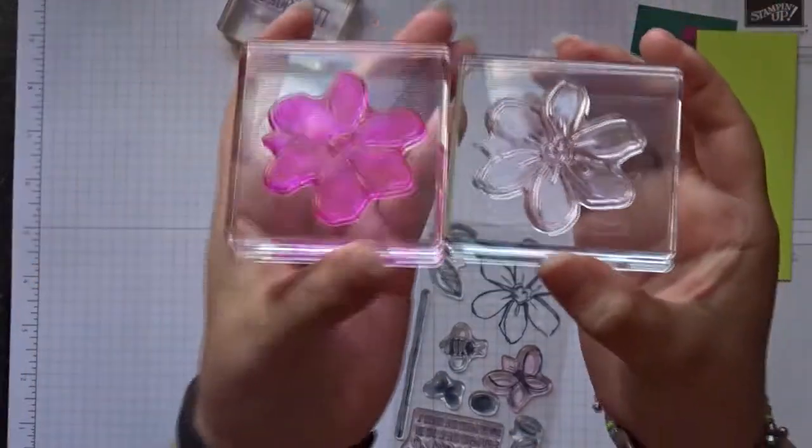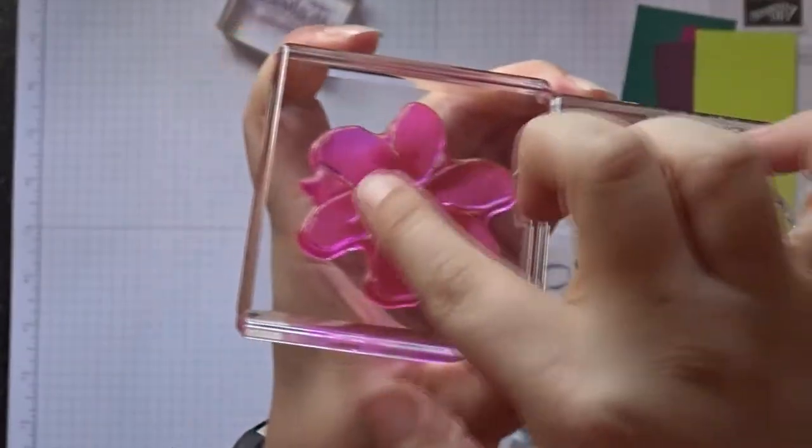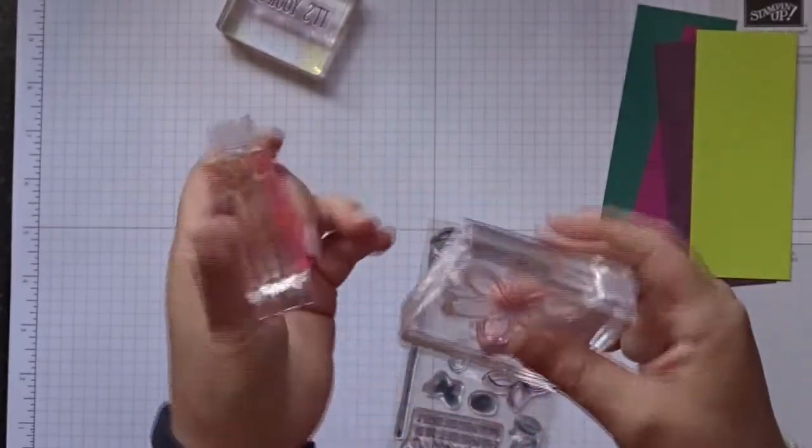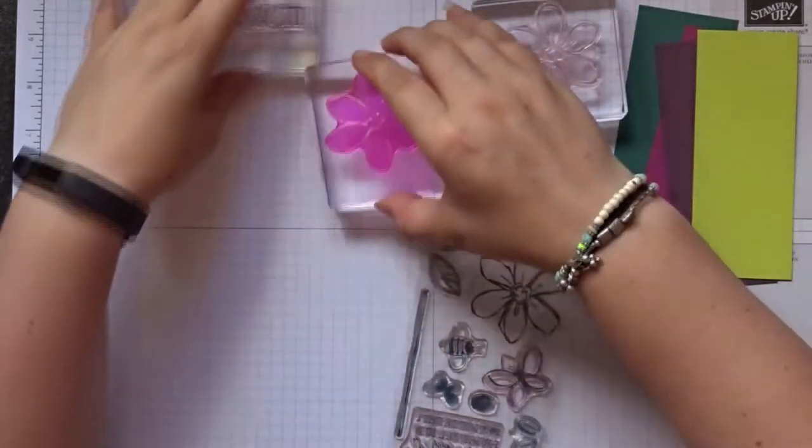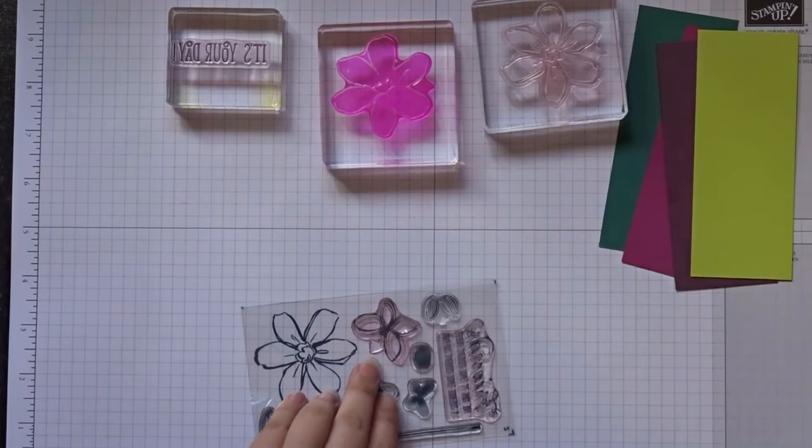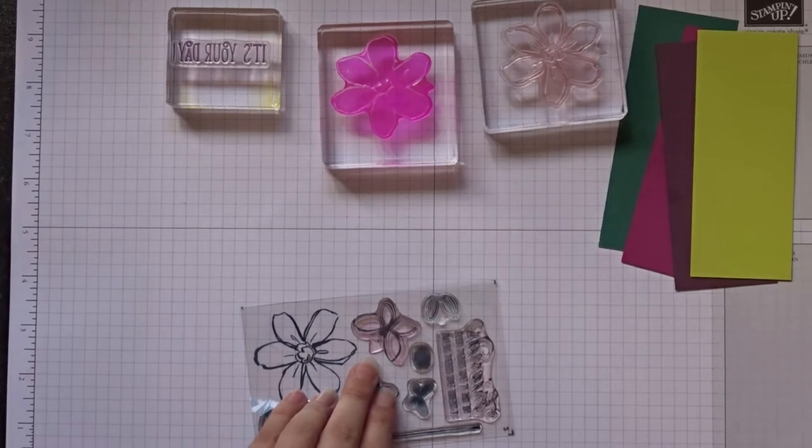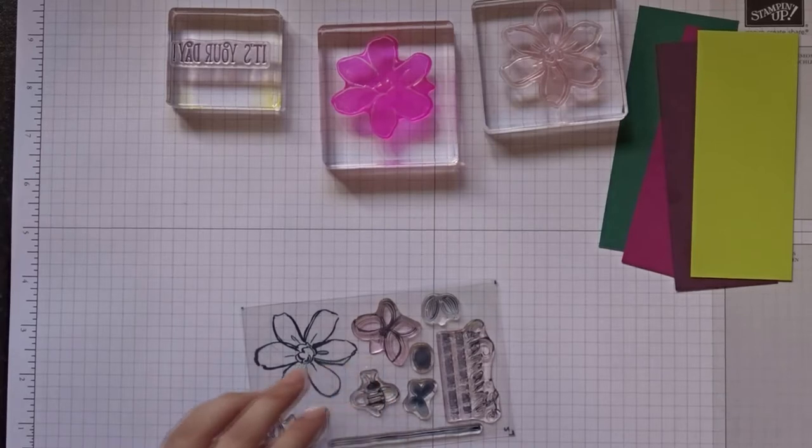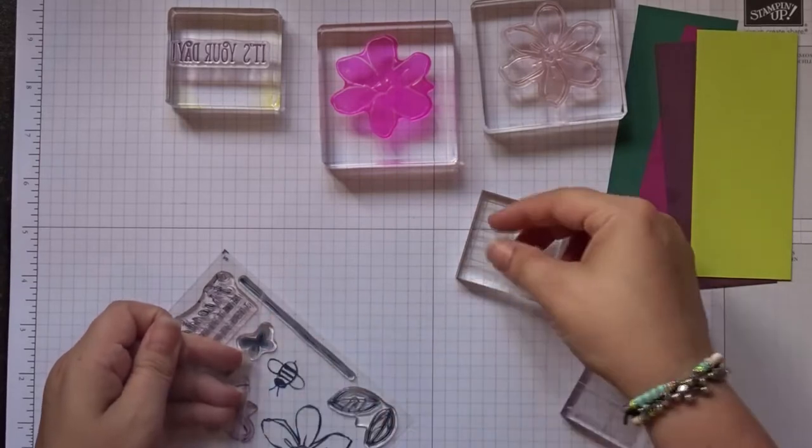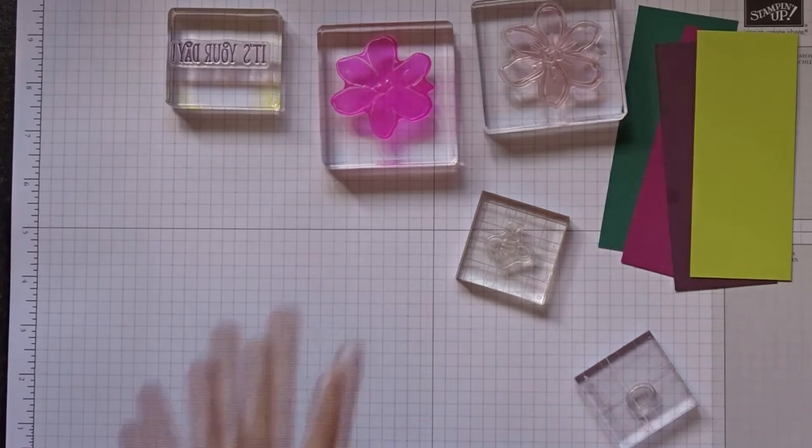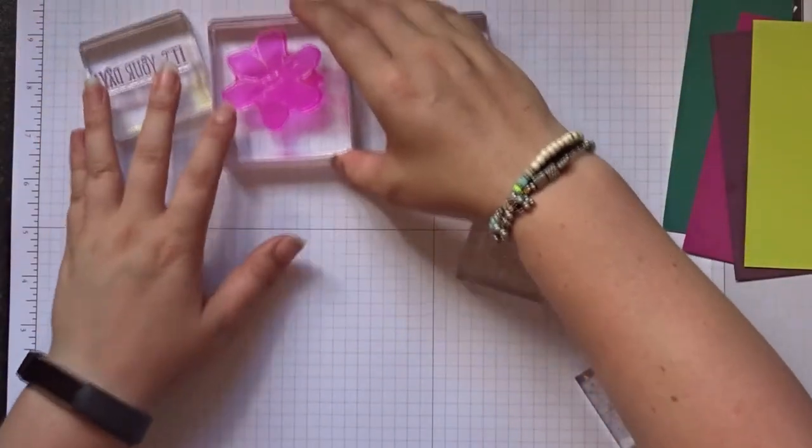Let's get the sentiment lined up first. We need "It's Your Day," we need the flower outline, and we need the flower inner. Hopefully on these you can see they both have a little point. That's to help you line up these stamps, so where that little point is you need to make sure you stamp them in the same way. And then we're also going to do a little bee.